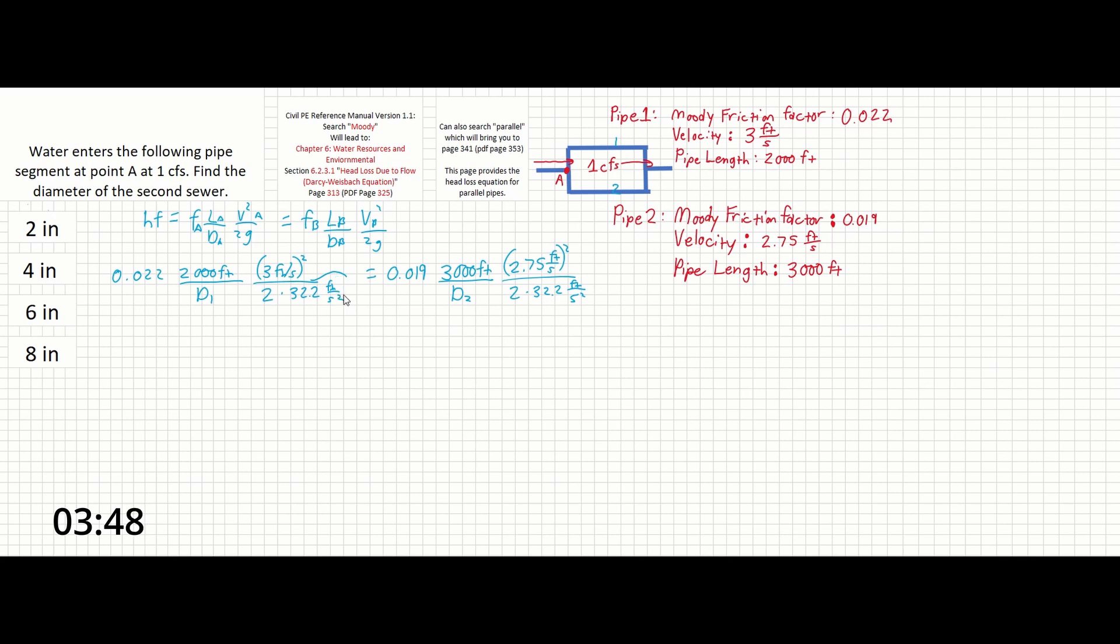Okay, so filling out this equation we can see that we are missing pipe diameter on both sides. Therefore we can solve for one of the unknown pipe sizes in terms of the other pipe size. So let's solve for d1. So if we start to fill out this equation here